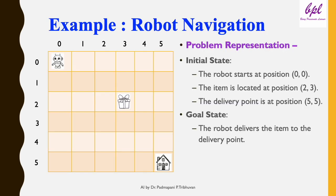Let's take an example of robot navigation. Consider a robot navigating in an environment to pick up an item and deliver it to a specific location — this is a classic problem in AI. The AI planning problem is defined by three main elements. Initial state: the robot starts at position (0,0), the item is located at position (2,3), and the delivery point is at (5,5). Goal state: the robot delivers the item to the delivery point.